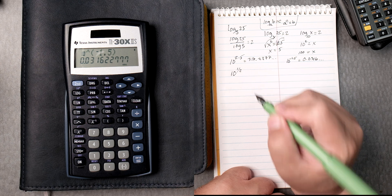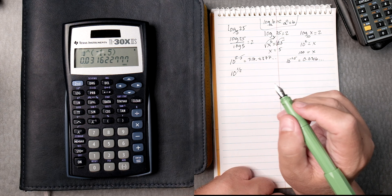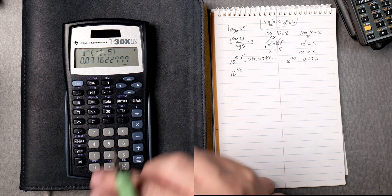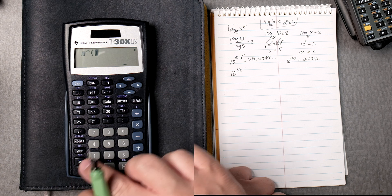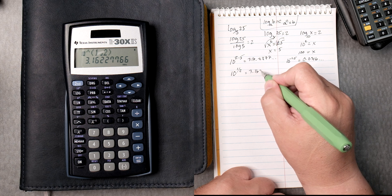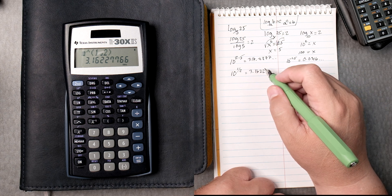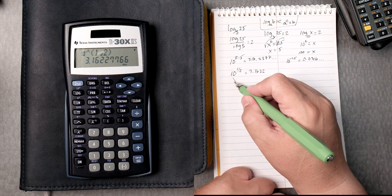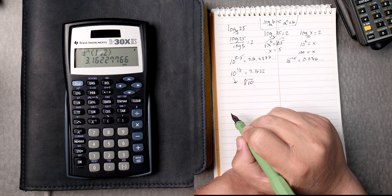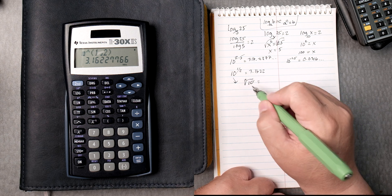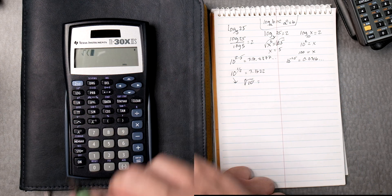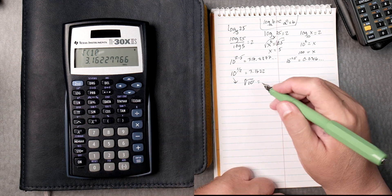Then 10 to the 1.5, I'm looking very quickly. I do see an ABC button here, so we can go second, log, 1, ABC, 2, close it, equals, and we get 3.1622. By the way, this can be rewritten as the square root of 10, where we have a base 2, and this 1 is over here. So this is really the square root of 10 as well. Second, square root, 10, enter, gives you the same answer. Perfect.